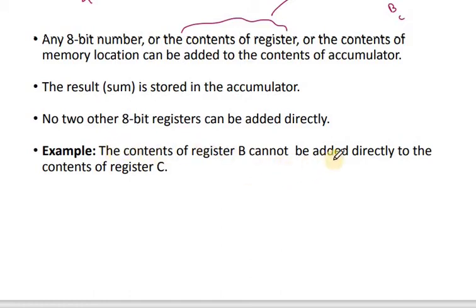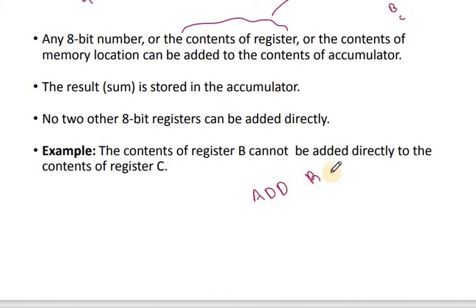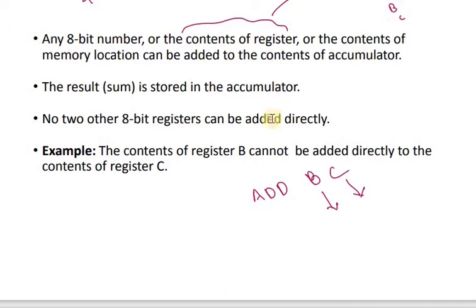No two other 8-bit registers can be added directly. For example, the content of register B cannot be directly added to the content of register C — that means an instruction like ADD B,C is not available. We will discuss what to do instead later.